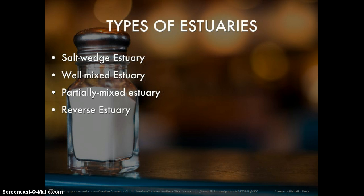Based on their natural characteristics, estuaries can be divided into four main types. Keep in mind that an estuary can be different types at different locations — for example, the ocean end versus the river end — and at different seasons, for example, the rainy season versus the dry season.